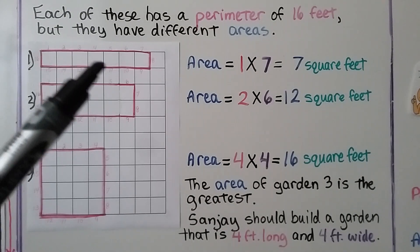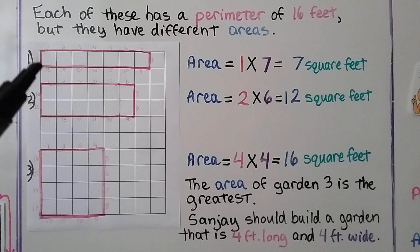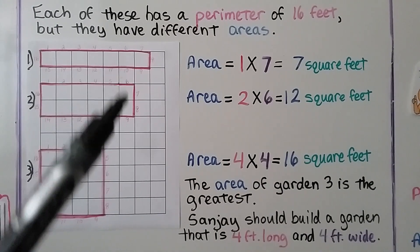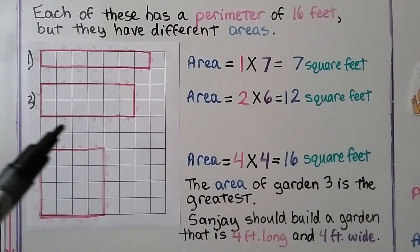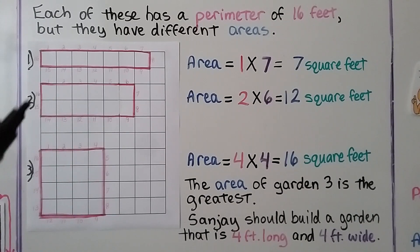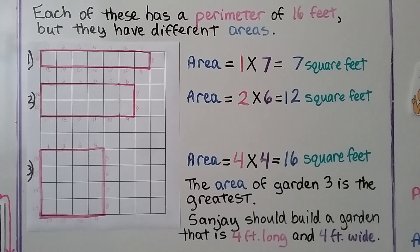This one has a perimeter of 16 if we count all the way around, but its area is a length of 1 and a width of 7. 1 times 7 is equal to 7 square feet. This one also has a perimeter of 16 feet — we can count 16 side lengths going around. Its area is a length of 2 and a width of 6, that's 12 square feet.